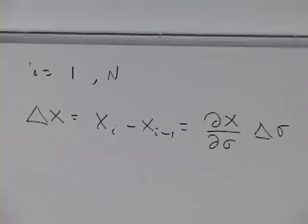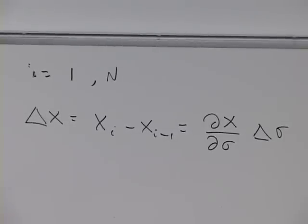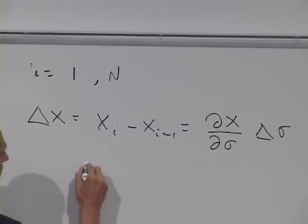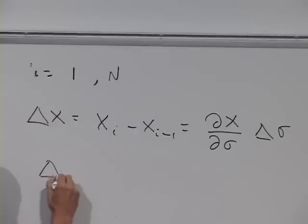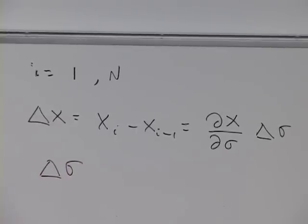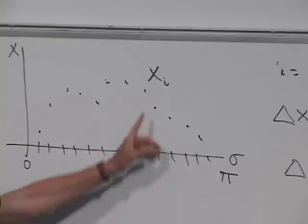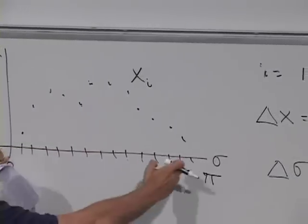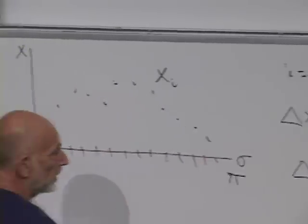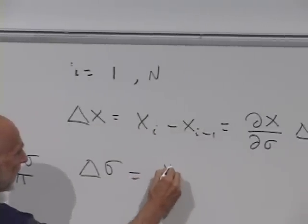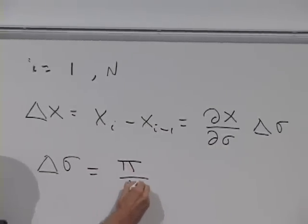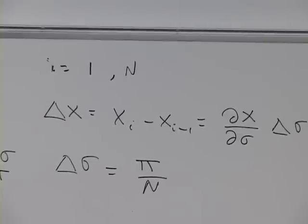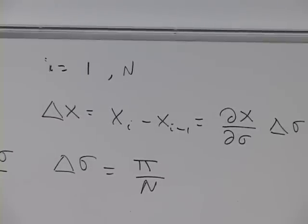How big is delta sigma? Delta sigma is the sigma interval between two neighboring values — that's the whole interval pi divided by n, chopped up into n little segments. So this is another formula we'll make use of.